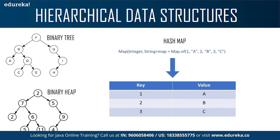Now talking about the heap — it's a complete binary tree which satisfies the heap property. A tree is said to be complete if all its levels except possibly the deepest are complete. The property of the binary tree makes it suitable to be stored in an array. It follows the heap property: a binary heap is either a min heap or a max heap. In a min heap, for every node in the heap, the node's value is greater than or equal to the values of its children. Popular applications of binary heap include implementing efficient priority queues and efficiently finding the K smallest elements in an array.